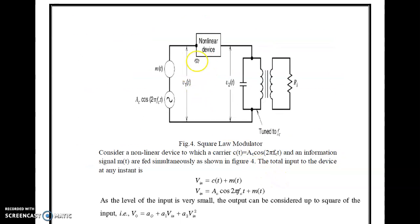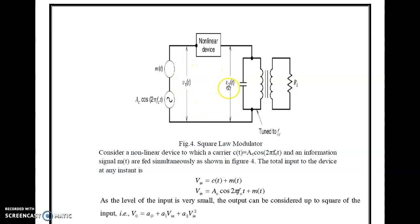The figure shows the square law modulator. The input message signal m(t) and carrier signal Ac·cos(2πfc·t) are applied to a non-linear device, followed by a tuned circuit at the carrier frequency fc. The input voltage V1(t) is the combination of the carrier and the message signal, so VIN = Ac·cos(2πfc·t) + m(t).